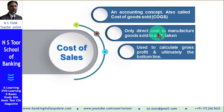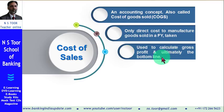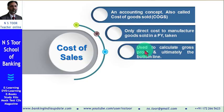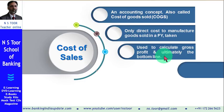The concept of cost of sales is used to calculate gross profit and ultimately the bottom line or net profit. When we calculate cost of sales, it helps us easily calculate gross profit and ultimately the net profit, which is also called the bottom line.